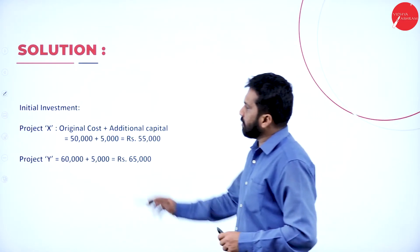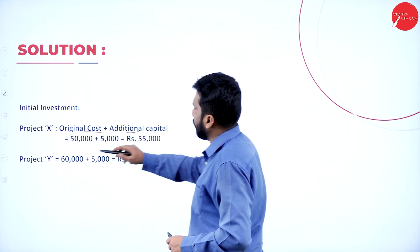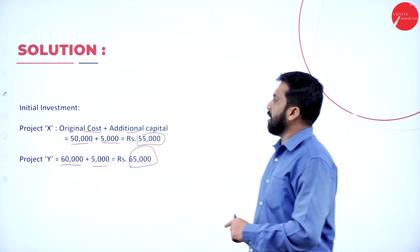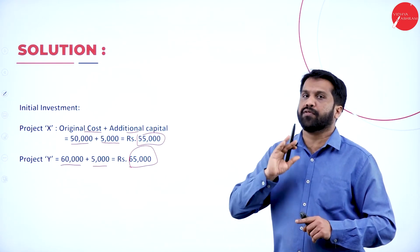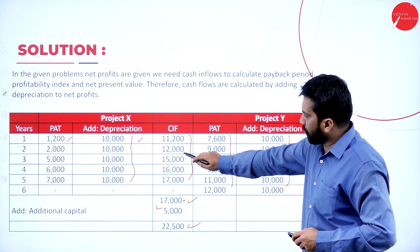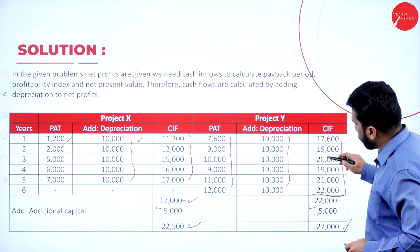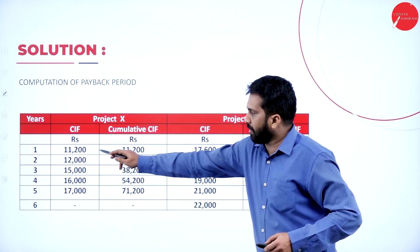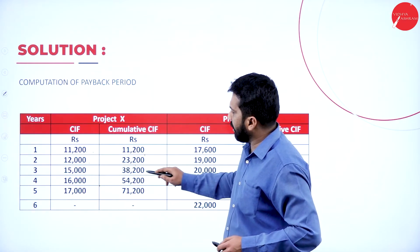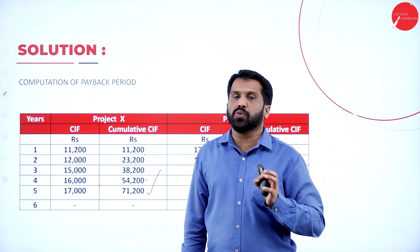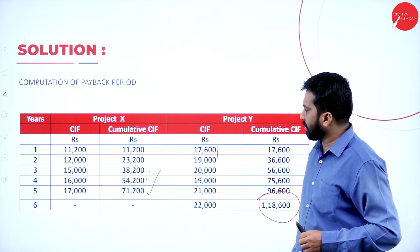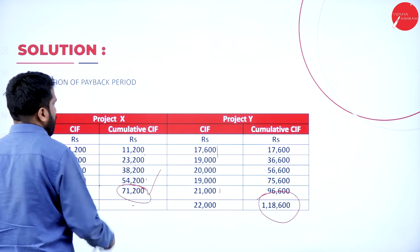Computation of payback period. You got all the cash inflow answers: 11,200; 12,000; 15,000; 16,000; 17,000; 19,000; 20,190 — all this is your income. Now cumulative: 11,200 plus 12,000 gives 23,000; plus 15,000 gives 38,000; plus 16,000 gives 54,000; plus 17,000 gives 71,000; plus 21,200. Similarly for project Y, add back everything to get cumulative totals ending at 1,18,600 and 71,200.